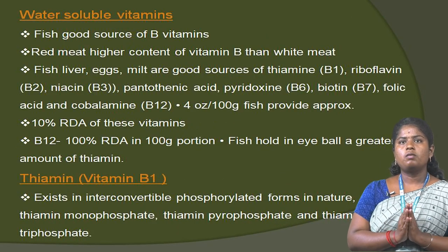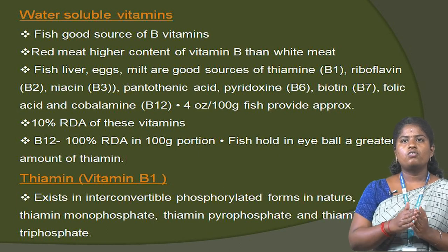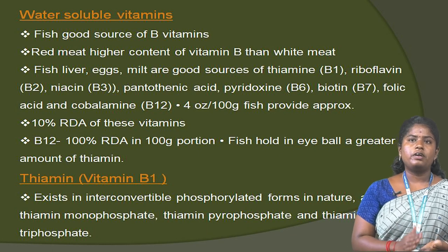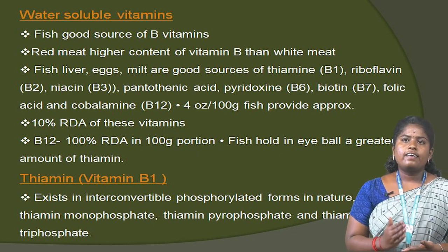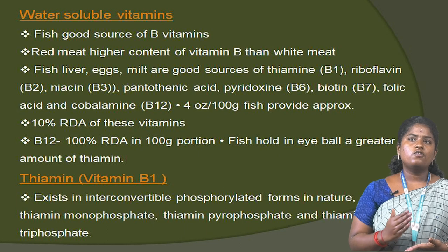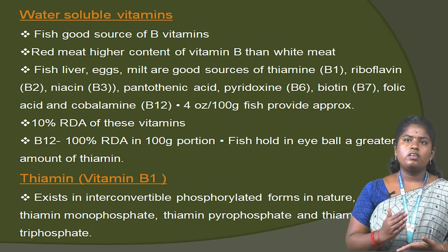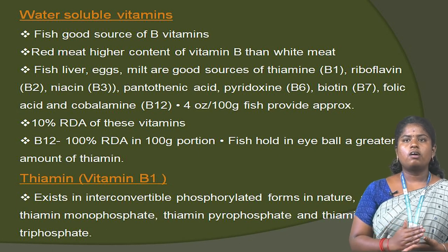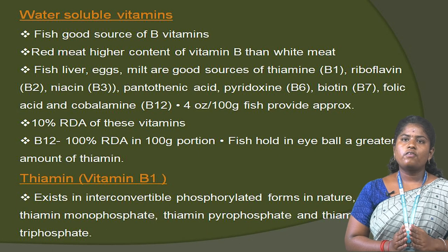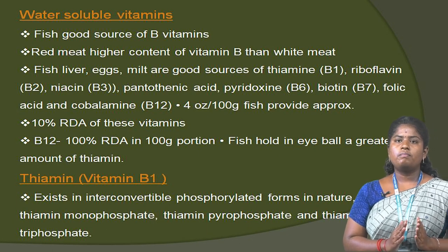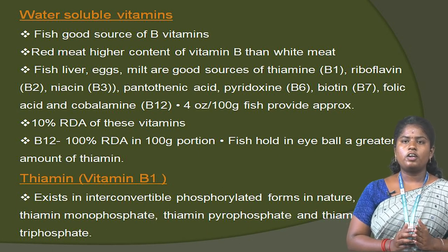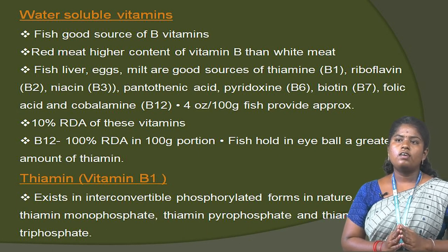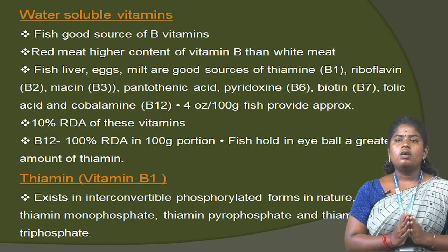Fish is a good source of B vitamins. Red meat has a higher content of vitamin B than white meat. Fish liver, eggs and milk are good sources of thiamine, riboflavin, niacin, pantothenic acid, pyridoxin, biotin, folic acid and cobalamin. Fish can provide 10% of the RDA of these vitamins, with 100% RDA in a 100-gram portion for vitamin B12. Fish hold a greater amount of thiamine than many other foods.